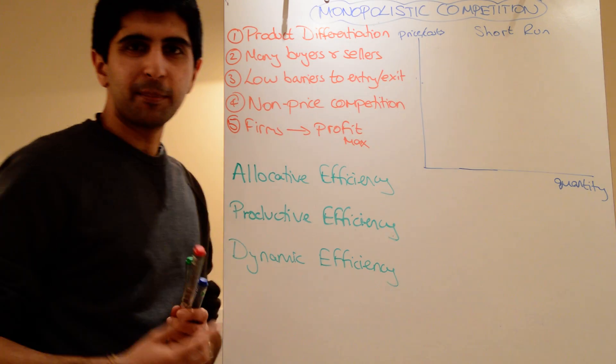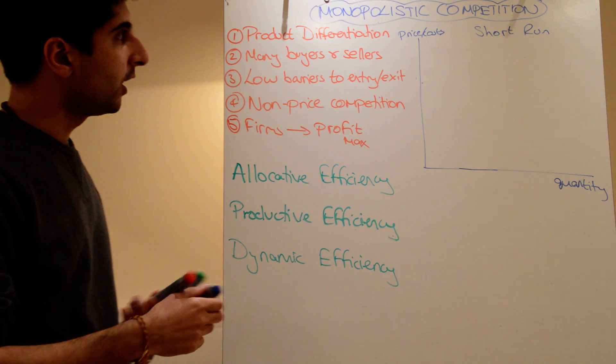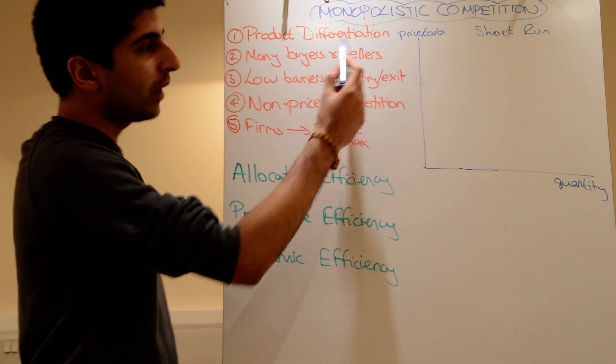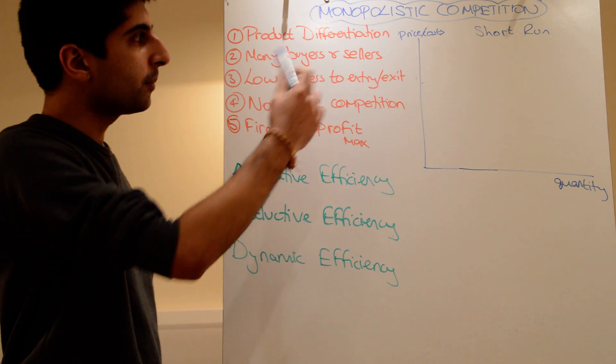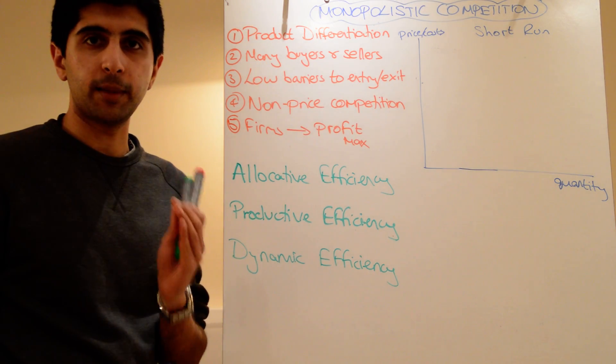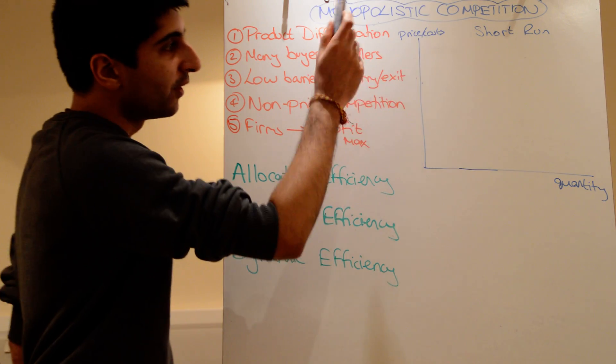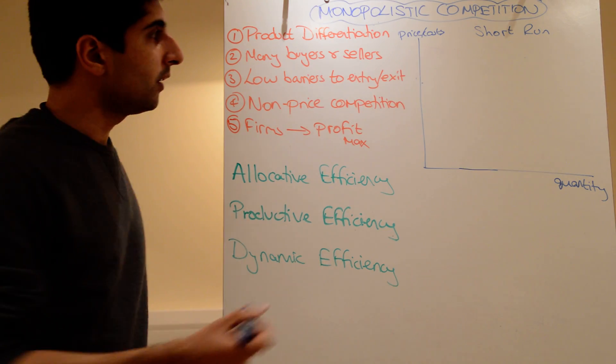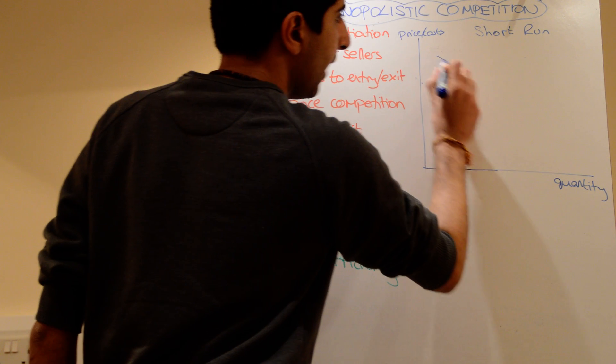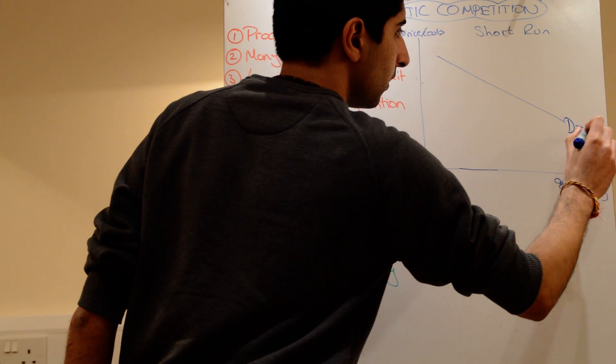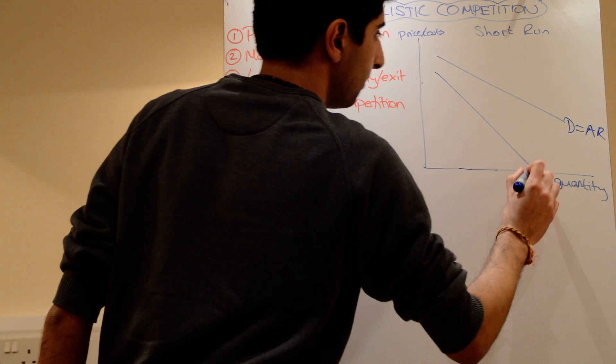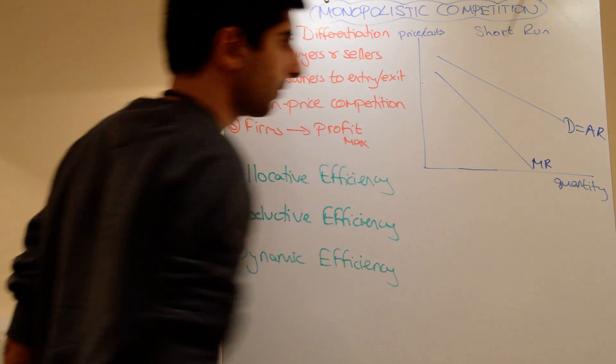The same kind of three-part system of doing market structures. So, because of this small element of price making power, because firms have some unique characteristics of their products, the firms will have downward sloping demand curves. Downward sloping average revenue, and marginal revenue, twice as steep.